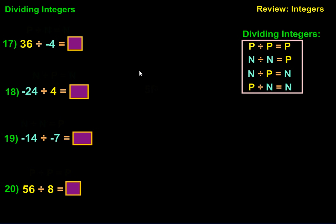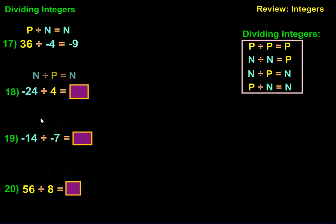Now let's take a look at dividing. For number 17, we have 36 divided by negative 4. The rule is a positive divided by a negative is going to give us a negative. So 36 divided by 4 equals 9, and it's negative 9. For number 18, we have negative 24 divided by 4. The rule is a negative divided by a positive is going to give you a negative answer. So 24 divided by 4 is 6, and it has to be negative.